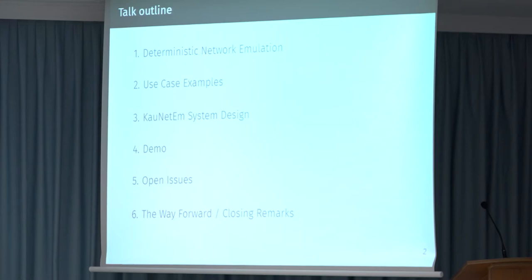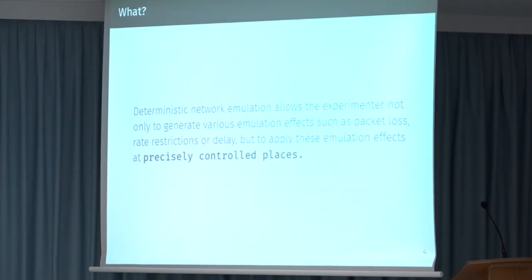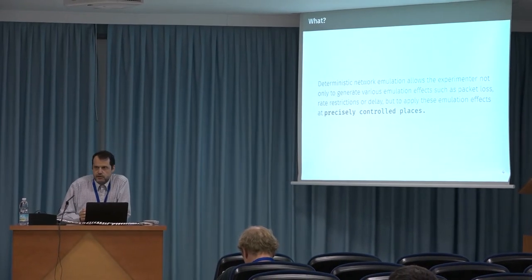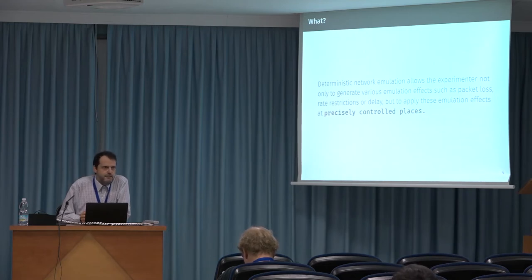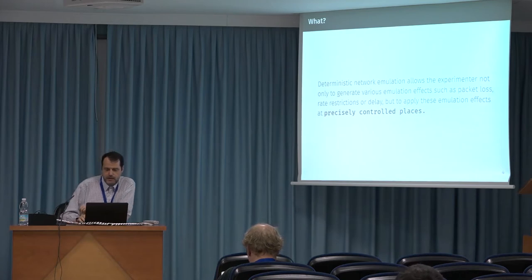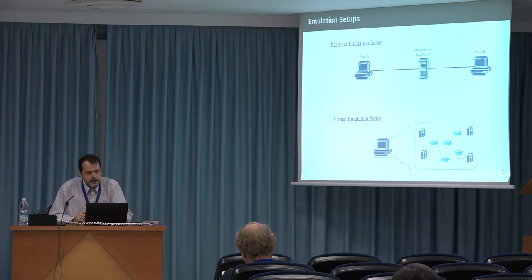By deterministic network emulation we mean emulation that allows the experimenter not only to generate various effects but to place these effects at precisely controlled places in space or time. In the case of space, this correlates to the packet numbering — we can say that we want an emulation effect at the 15th packet in a flow, or the 354th, or whatever. We can also control emulation effects in time to specify them at particular points in time.